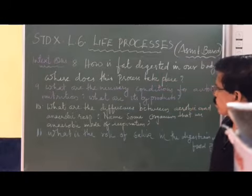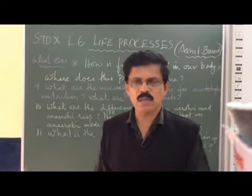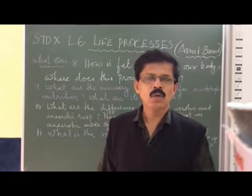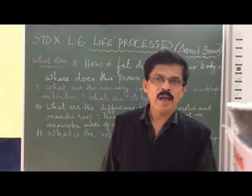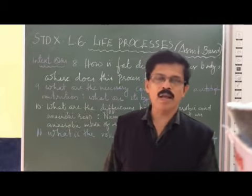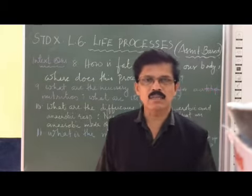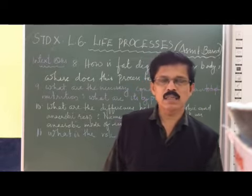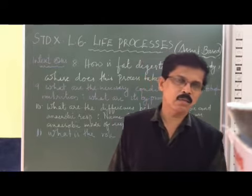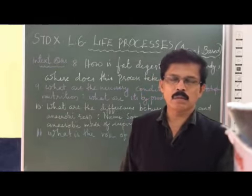Question 9: what are the necessary conditions for autotrophic nutrition? Sunlight, carbon dioxide, water, and chlorophyll are the important requirements. In plants, during autotrophic nutrition — that is, photosynthesis — light energy is converted into chemical energy, which is trapped by the chlorophyll molecules.